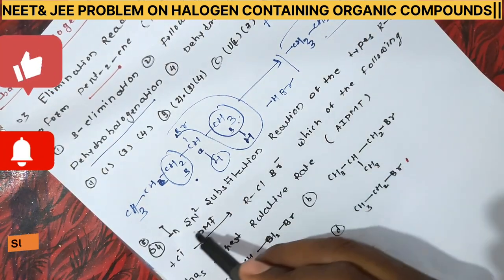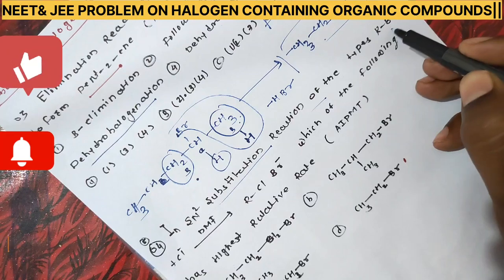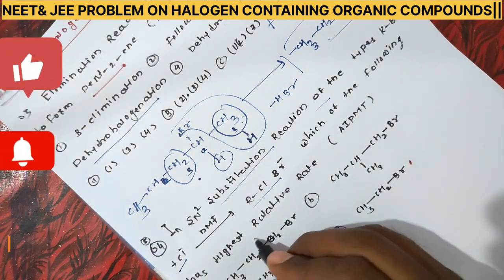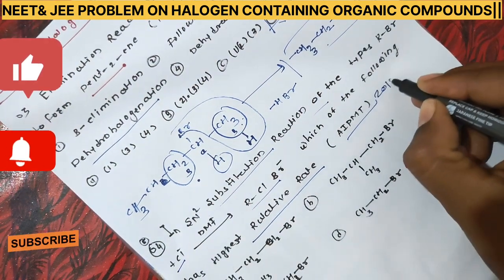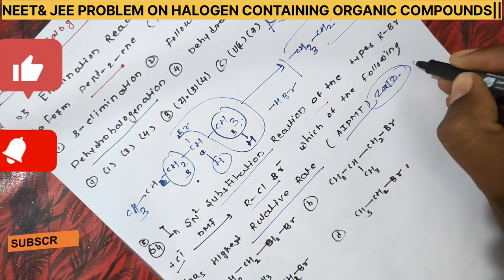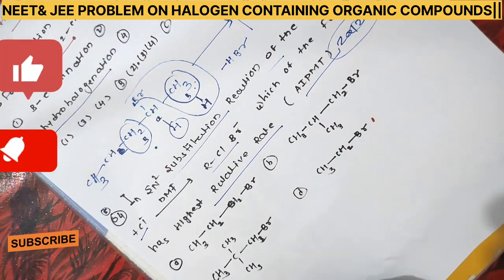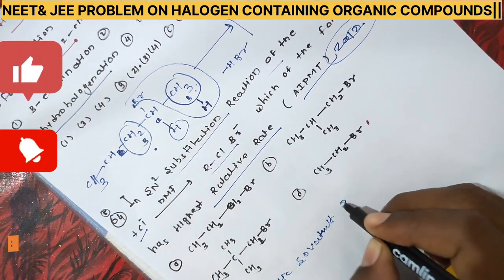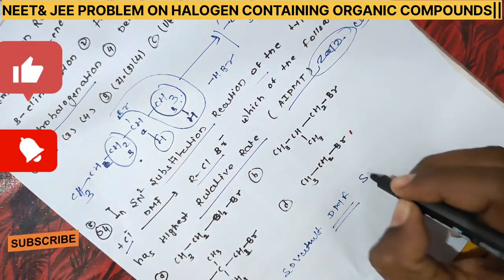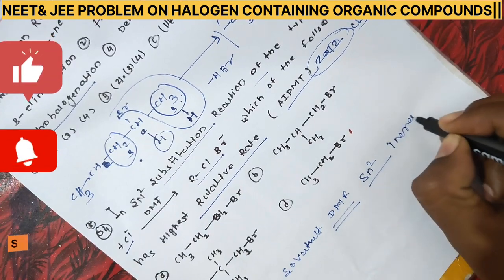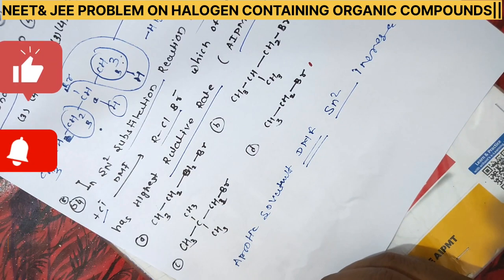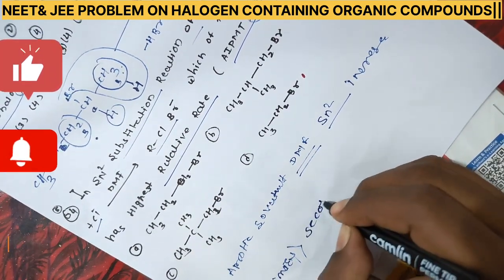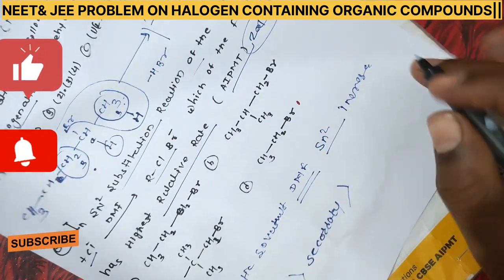Next question: in an SN2 substitution reaction of the type RBr + Cl⁻ in DMF gives RCl, which of the following has the highest reactivity rate? This is AIPMT 2012. As you know, when an aprotic solvent like DMF is used, SN2 reaction reactivity increases, and reactivity order is primary > secondary > tertiary.